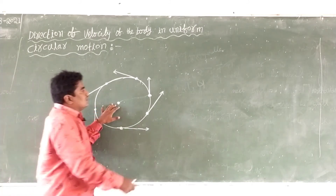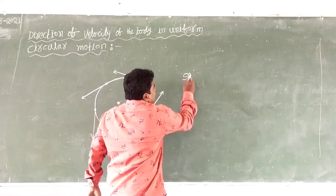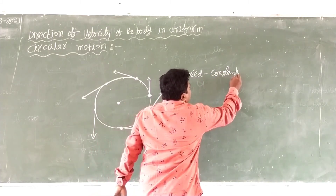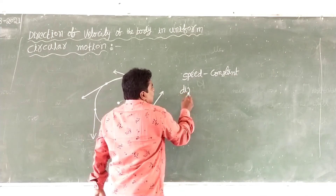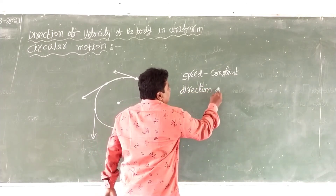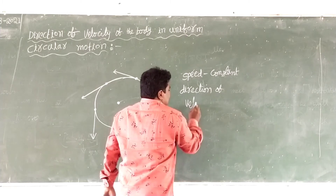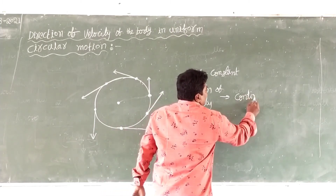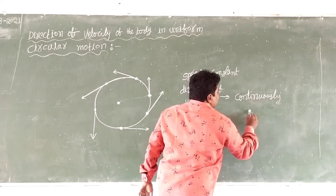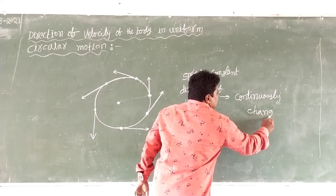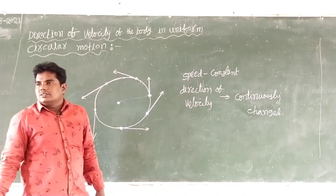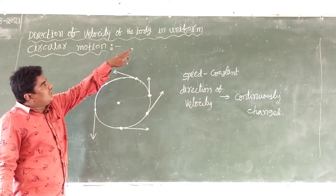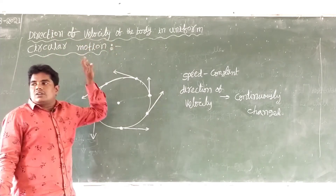If the body is moving in a circular path, there is speed — constant. The direction of velocity continuously changes. So this is the direction of velocity of the body in uniform circular motion.